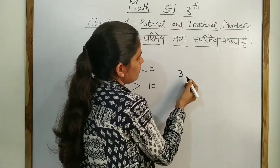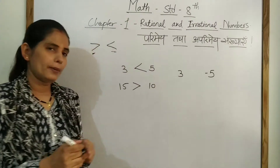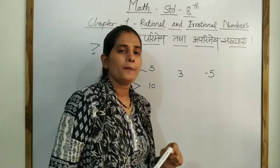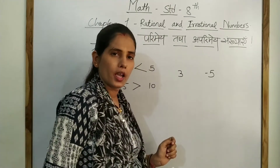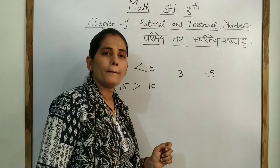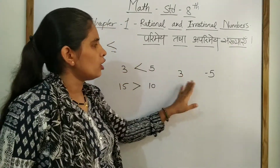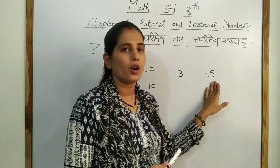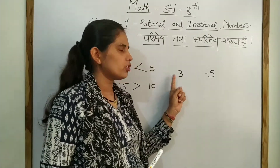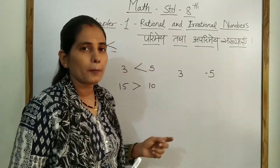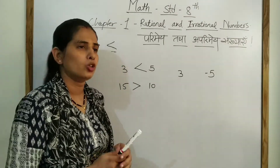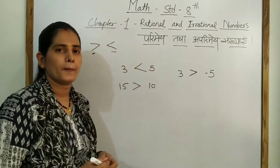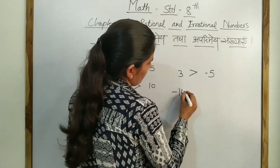Here is 3 and here is minus 5. Here we have a positive number and a negative number. You have to understand that 3 is bigger or minus 5. This is our positive number. A positive number is always bigger than a negative number, so the sign points toward minus 5.